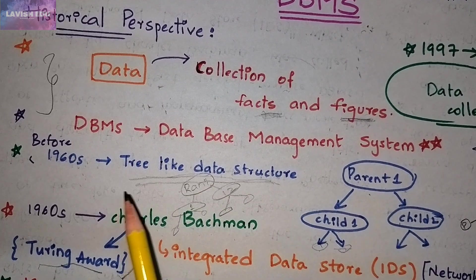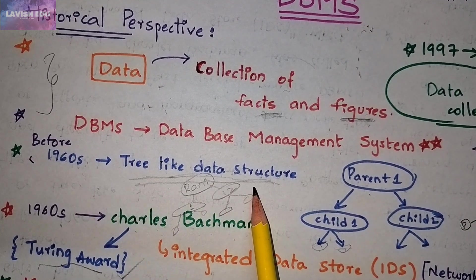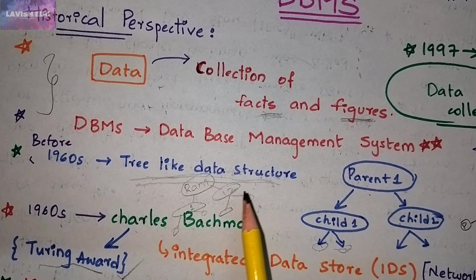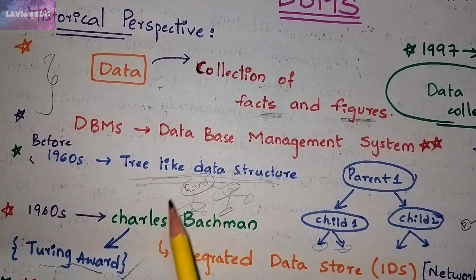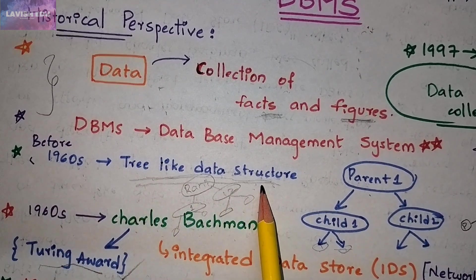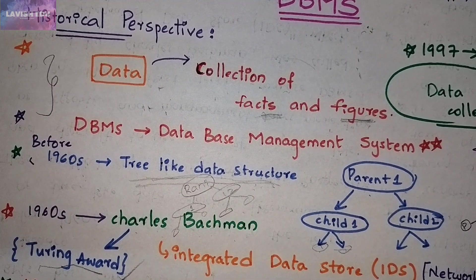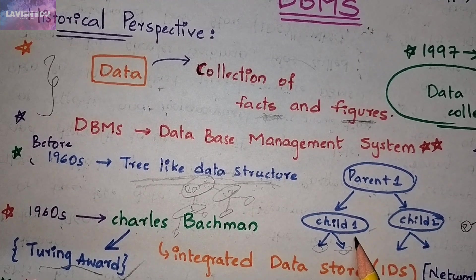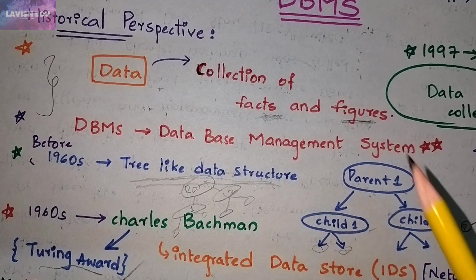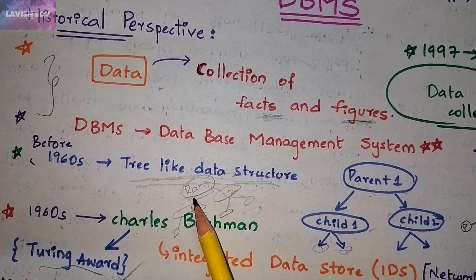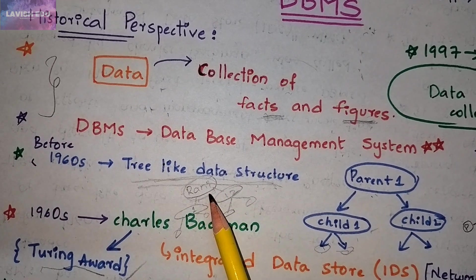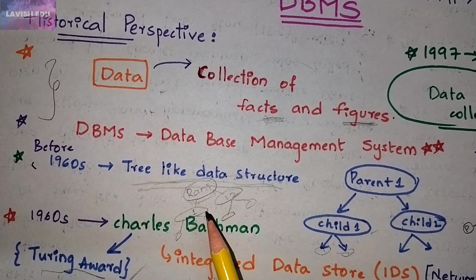Before 1960s, a tree-like data structure was introduced. If you've studied data structures, this will be simple to understand. A tree-like data structure is based on a parent-child relationship — a parent has two or three children, and each child can have sub-children. For example, a student record for 'Rani' with roll number 1 and age 12 can be stored in this way. Large chunks of data were stored using this model before 1960.